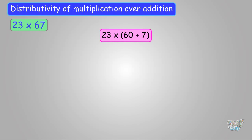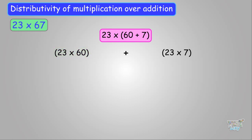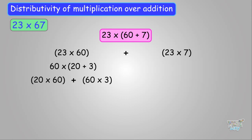Now we have to multiply 23 and 67. We will be using this property. Let 67 be 60 plus 7. We will write 23 times 60 plus 23 times 7, and multiply each separately then add the results. Now for 23 times 60, let's split this further: we write (20 plus 3) times 60. Again using the property: 20 times 60 plus 60 times 3, which gives 1200 plus 180, which equals 1380. So 23 times 60 is 1380.